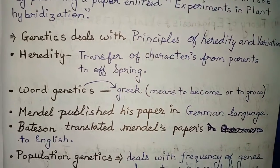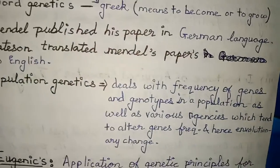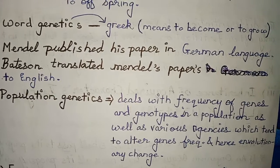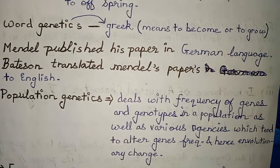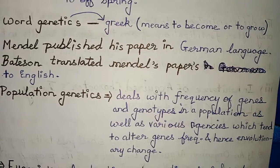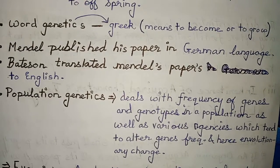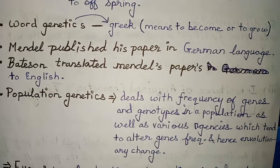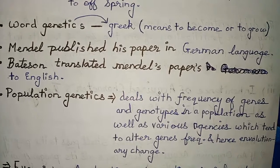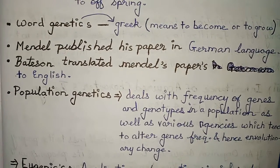Population genetics — this is the definition: it deals with the frequency of genes and genotypes in a population, as well as the agencies which try to alter or change gene frequency, hence driving evolutionary change.